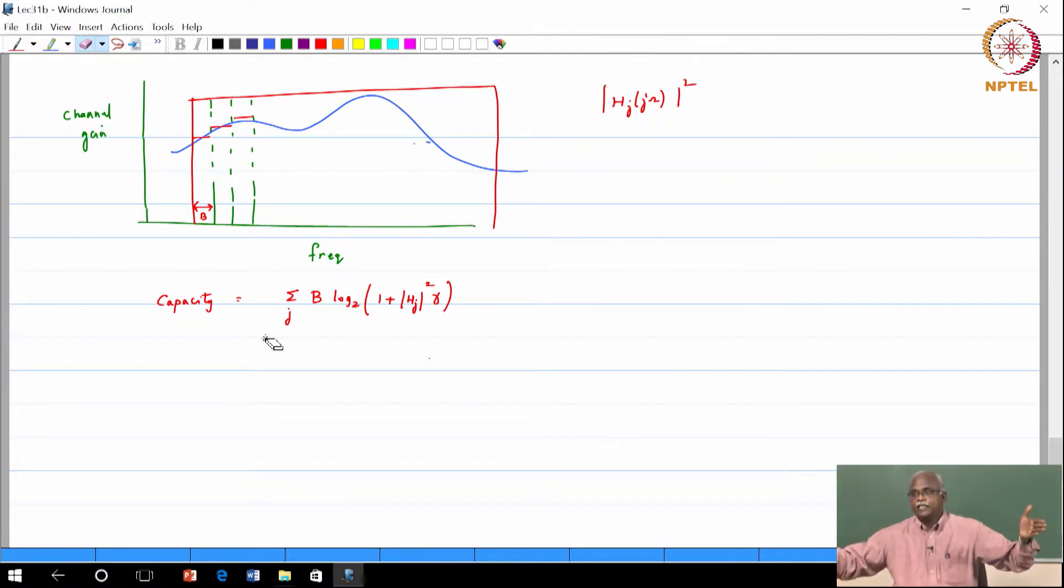This wide band signal, wide band channel, I broke it up into sub bands for each of which I could make that assumption that the gain is flat, then I use the old formula.